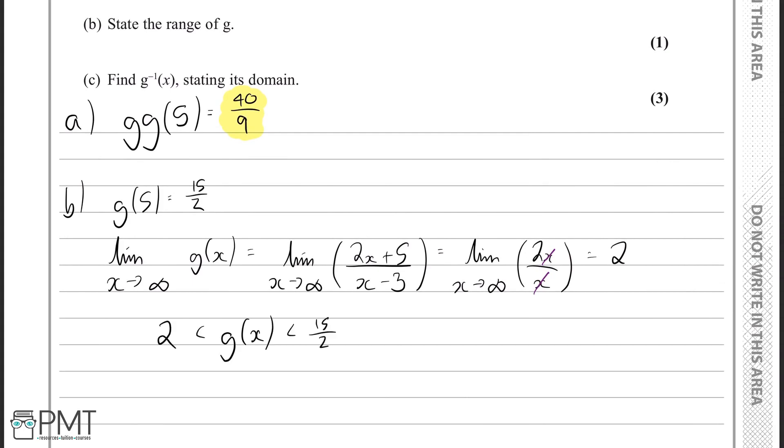And now we need to check something. Can g of x ever be 15 over 2? Well, yes, it can, because x can be 5. Therefore, g of x can be 15 over 2, which means this must be a less than or equal to symbol.